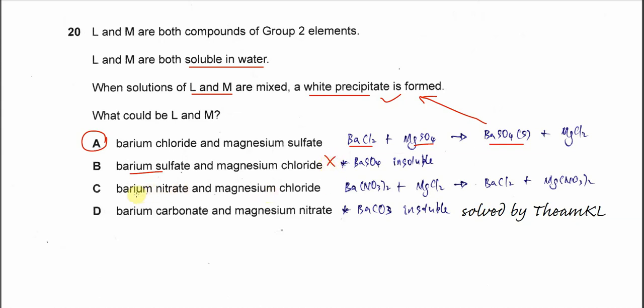Barium nitrate and magnesium chloride, these two are soluble. But after they mix it will form barium chloride and magnesium nitrate. Both are soluble too. So no precipitate formed. So this one cannot.